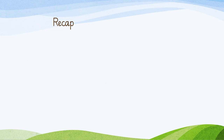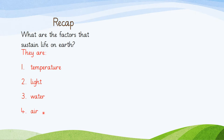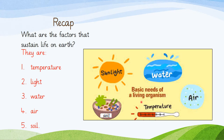We shall start with a recap of the previous lesson. Do you remember what the factors that sustain life on Earth are? These factors are: 1. Temperature, 2. Light, 3. Water, 4. Air, 5. Soil. These are the basic needs of a living organism, so living organisms need to live at a place where they find all of these things suitable to their bodies.